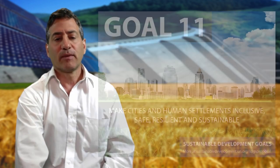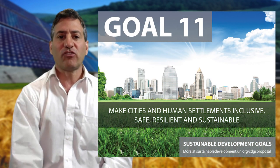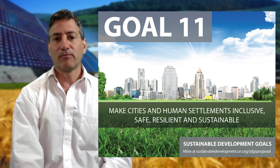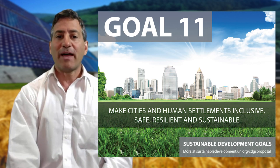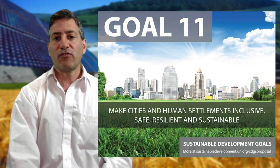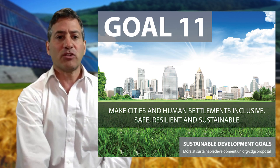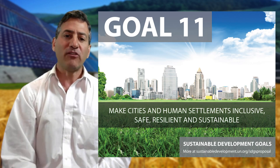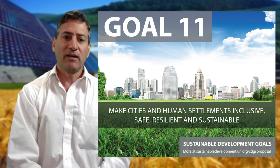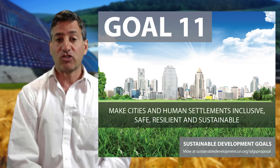Goal eleven: make cities and human settlements inclusive, safe, resilient and sustainable. The FEW nexus helps us achieve this goal by helping to ensure food, energy and water security. The assumption is that with our basic needs met, humans are more likely to engage in peaceful trade, since they can't be threatened with starvation or water and energy shortage.